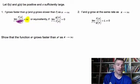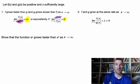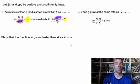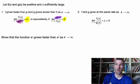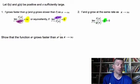On the flip side, if we take the same setup and look at the limit of g of x over f of x and get a limit of zero as x goes to infinity, then g actually grows slower. On the other hand, if f and g grow at the same rate, we'll get some specific limit — not zero — but some other specific number. When that happens, you have two functions that grow at the same rate.